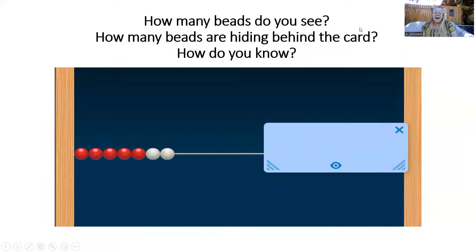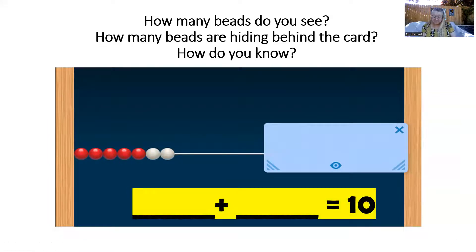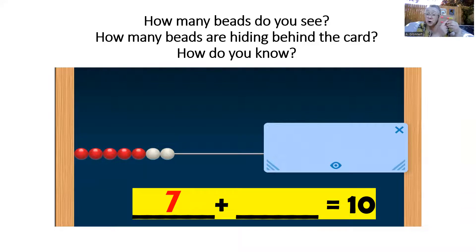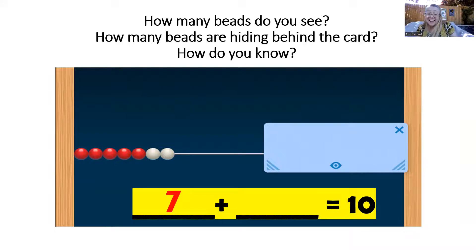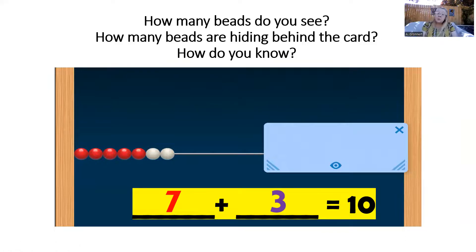How many beads do you see now? Can you make that on your number rack? Yeah, there are seven beads. And if there are seven beads showing, how many beads are hiding behind the card? There are three. That's right. Let's go ahead and read that equation together: seven plus three equals 10.